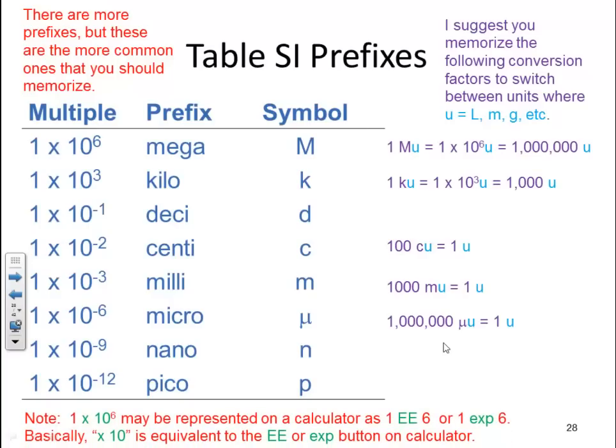Important note, 1 times 10 to the 6 may be represented on a calculator as 1 EE6 or 1 EXP6. Basically that times ten is equivalent to the EE or EXP button on your calculator. It's very important that you realize how to handle your calculator and inputting that into your calculator. You need to know how to use your calculator correctly to make sure that you're doing your calculation in the end, getting the correct answer.